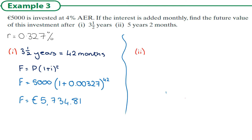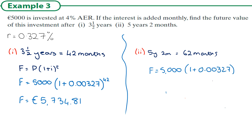Part two is five years and two months, which is 62 months. So F equals 5000 times one plus 0.00327 to the power of 62. That goes into the calculator and gives six thousand one hundred and twenty-one euro and seventy-four cents. Note: the conversion between AER or APR and the monthly rate tends to be one part of a question, and applying it tends to be another part — we rarely see them fully mixed in state examination papers.